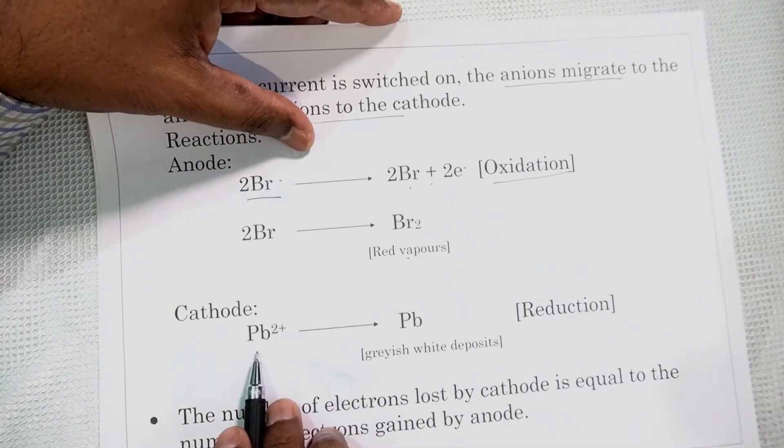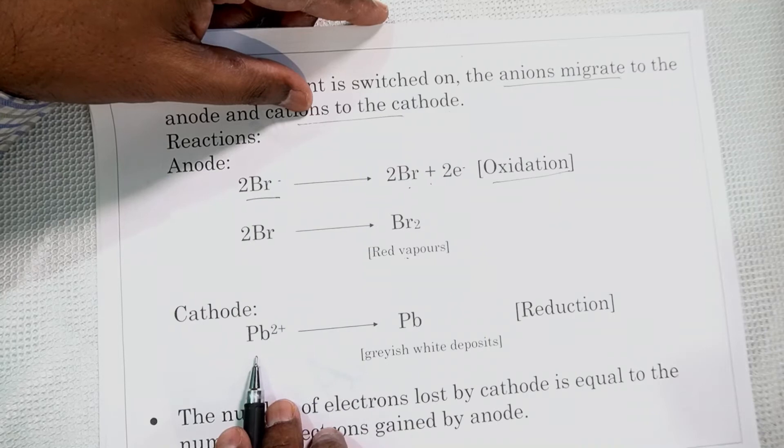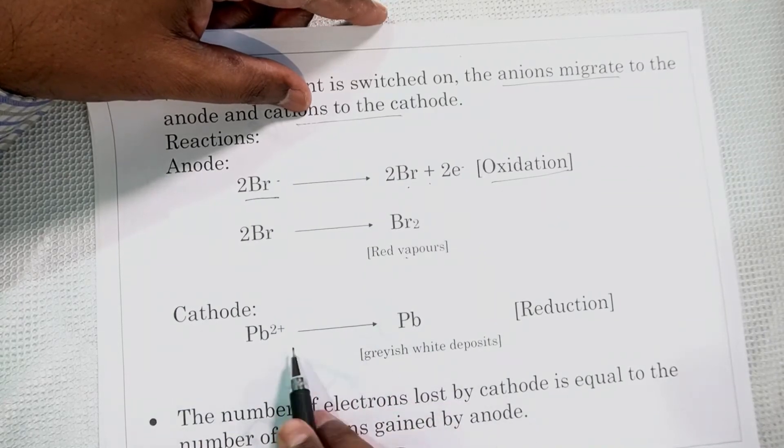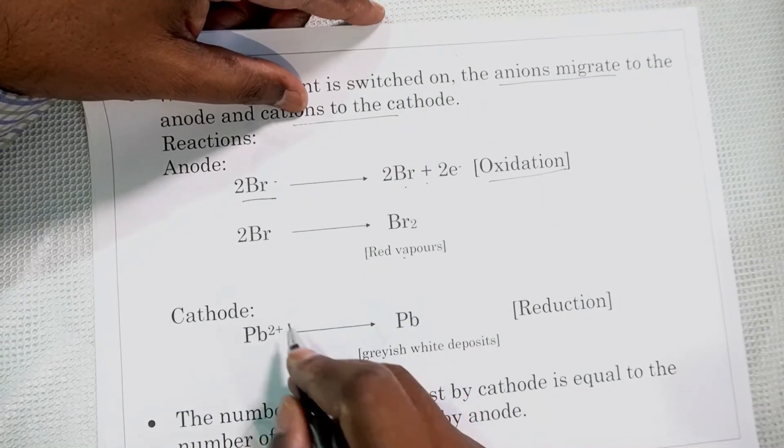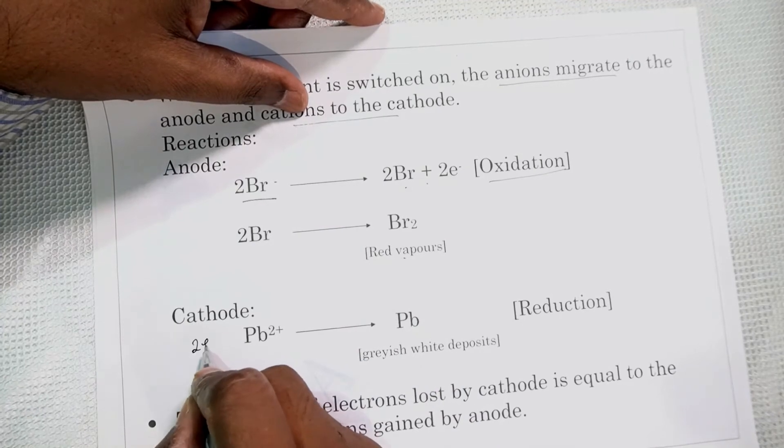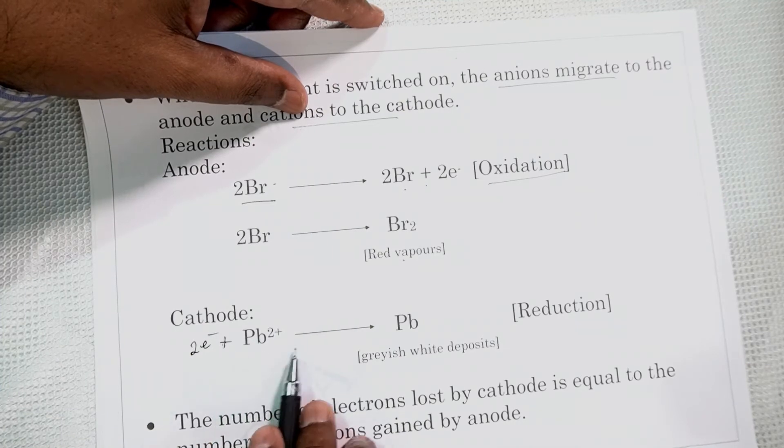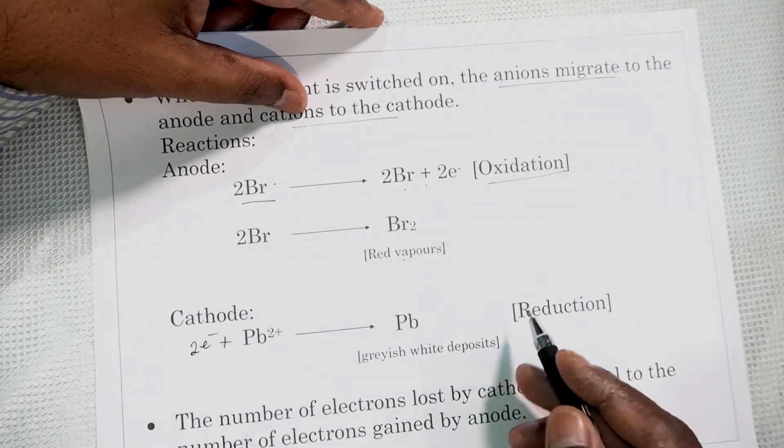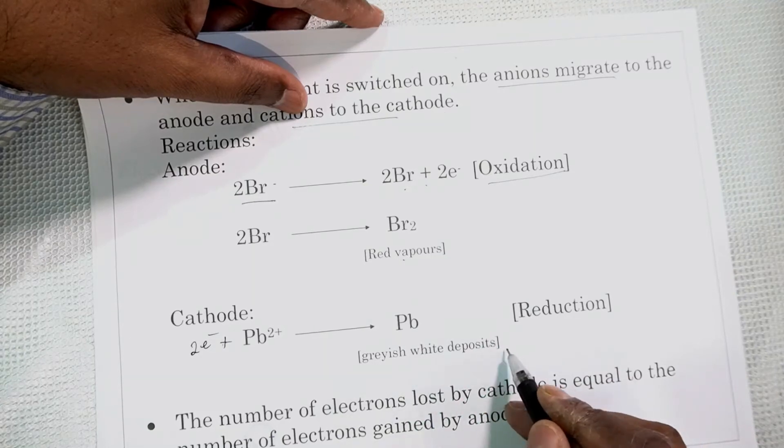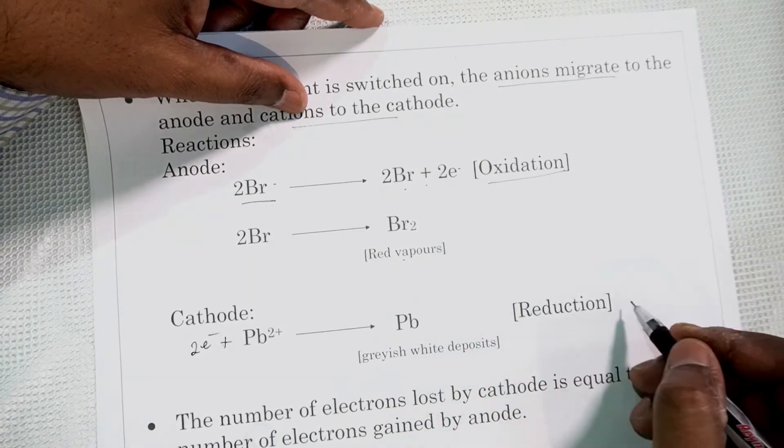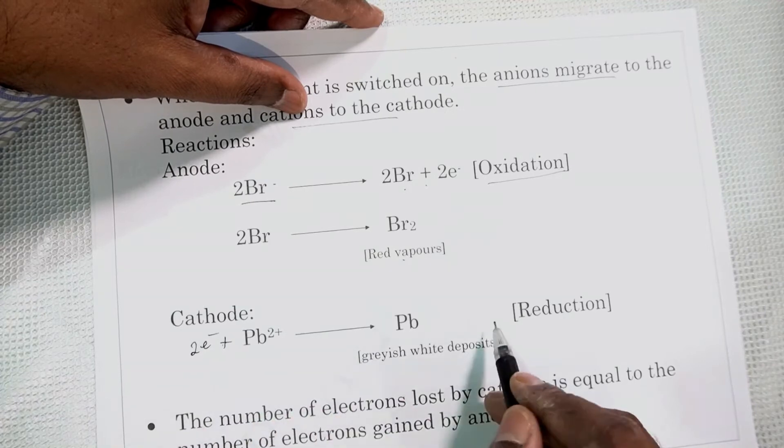Then the cathode. Now what is happening? The lead ions being cations migrate to the cathode. So there it will take up two electrons. Two electrons are taken up because cathode has excess of electrons. The lead ions have deficiency of two electrons. It will take two electrons and form neutral lead metal. Grayish white metal deposits at the cathode. This is a reduction reaction because the substance gains electrons.